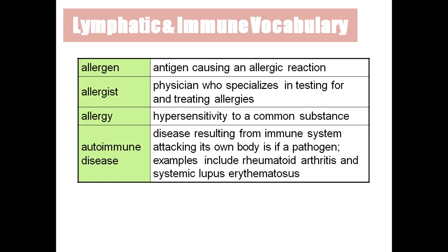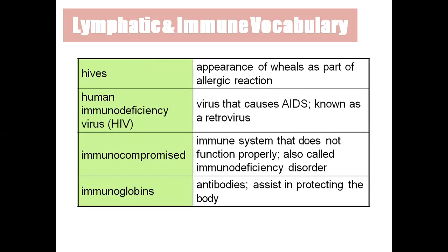Autoimmune disease is a disease resulting from the immune system. Our own antigens on our RBCs and our own antibodies in plasma fight together, causing an inflammatory reaction — we call that autoimmune disease. 'Auto' means same, our own. Examples include rheumatoid arthritis, which is an inflammatory reaction, and systemic lupus erythematosus.